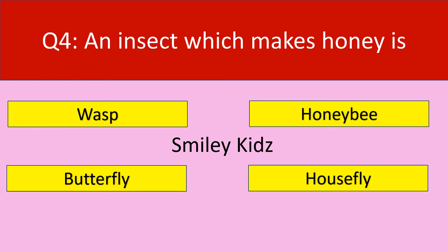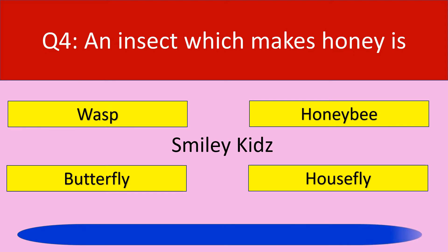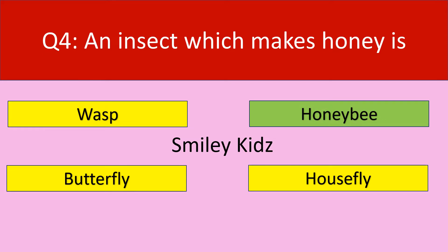Question number 4. An insect which makes honey is. Options are wasp, honeybee, butterfly, and housefly. Your time starts now. The correct answer is honeybee. An insect which makes honey is honeybee.